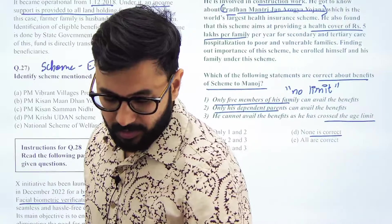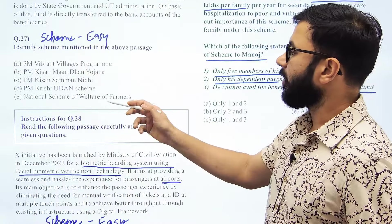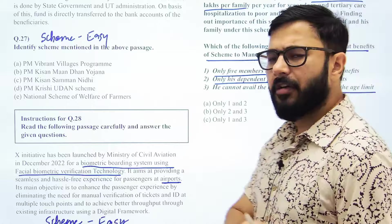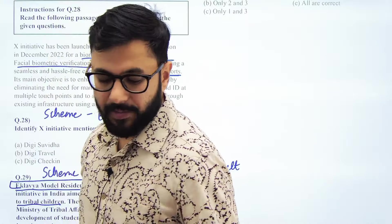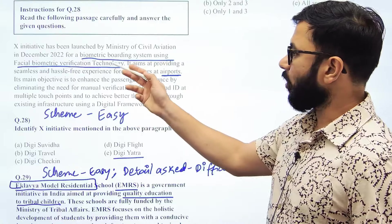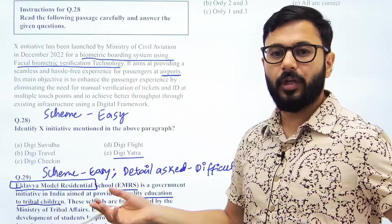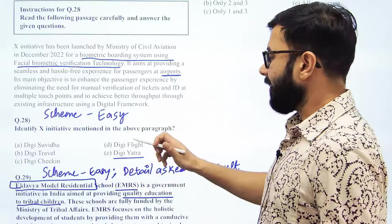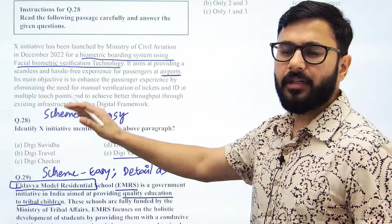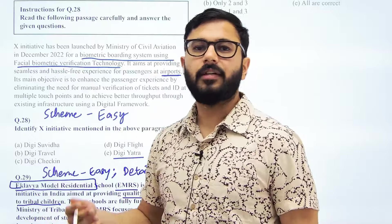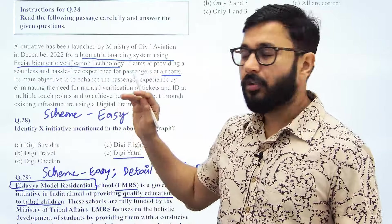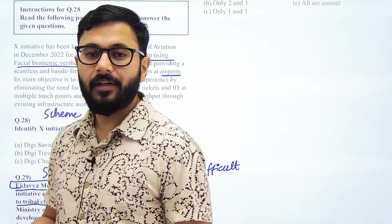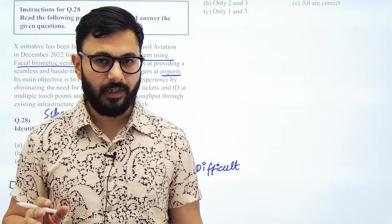Questions 27 and 28 are also similar in nature. Question 27 is about PM Kisan — it talks about farmers getting 6,000 rupees per annum. Very simple — anybody who had read about PM Kisan would be able to answer it. Question 28 talks about airports and biometric boarding — it talks about DigiYatra. If you have traveled by flight in the last one or one and a half years, you would identify it without any problem. Even if you have not traveled, the scheme is often mentioned in government scheme documents. So these three questions were ones where you knew the answer and could answer them correctly — very simple, very straightforward.